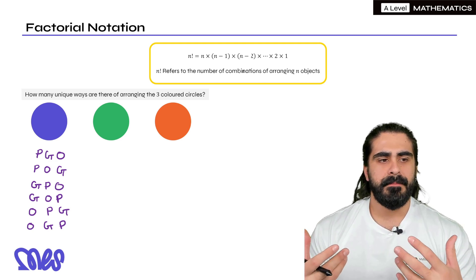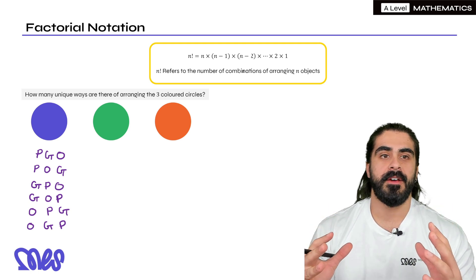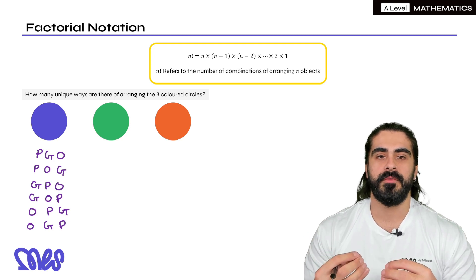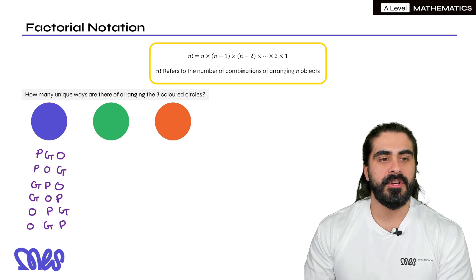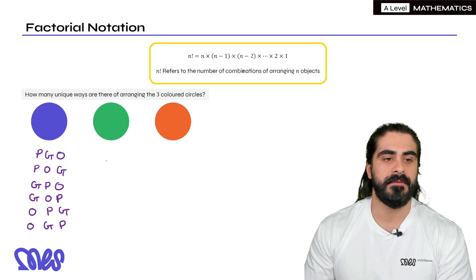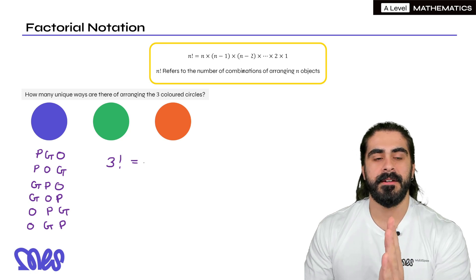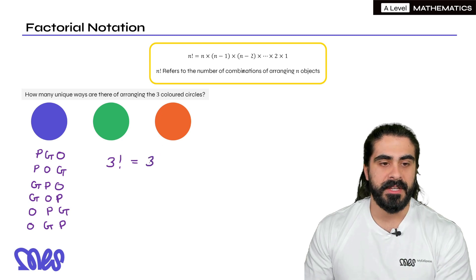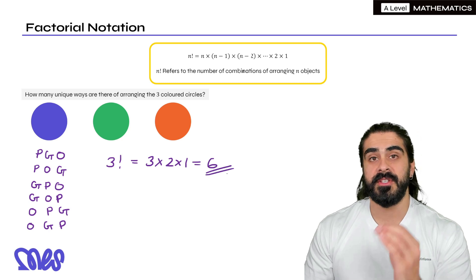But generally in statistics and pure maths, we're not actually interested in what the combinations are, we just care about how many they are. If we look at what I wrote above, n factorial refers to the number of combinations of arranging n objects. Now here we have three objects, so that must mean that the total number of arranging them is three factorial. Three factorial is three times two times one, which gives us six. So this is the quick way of doing it.